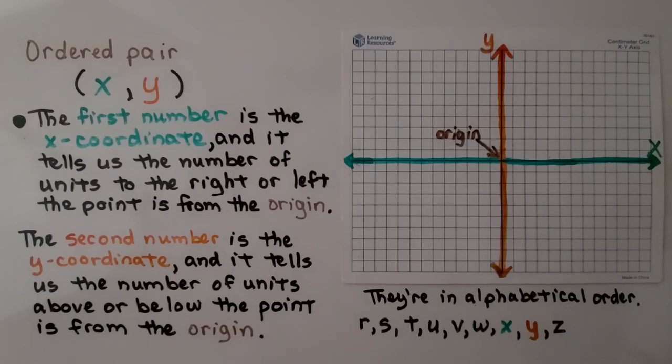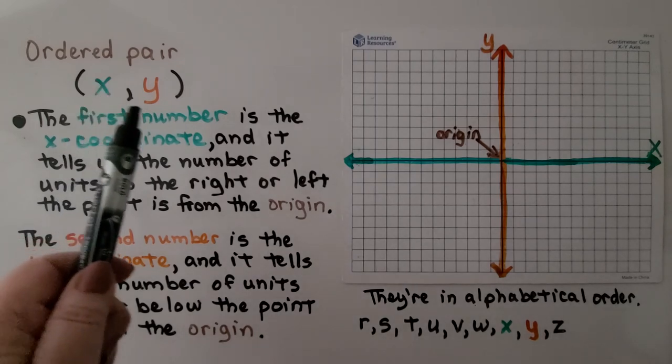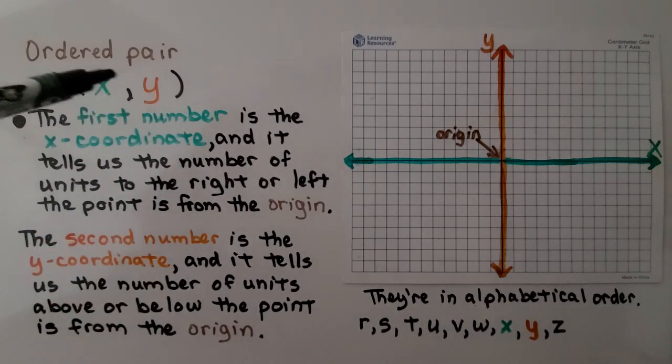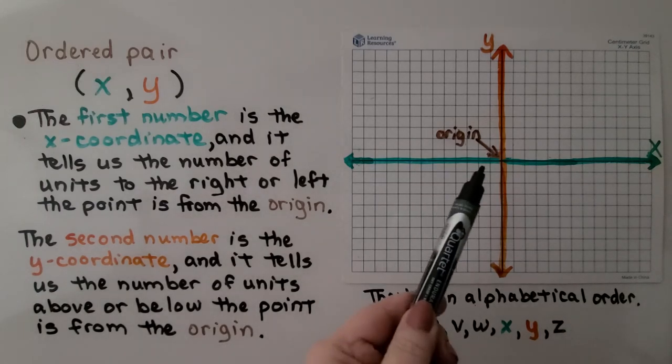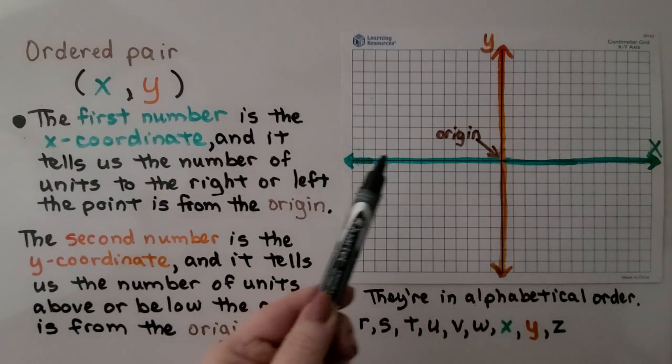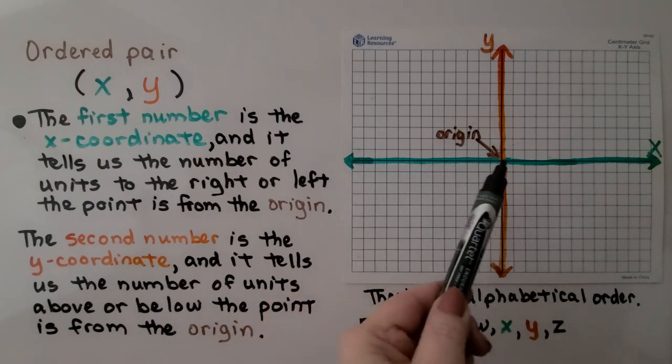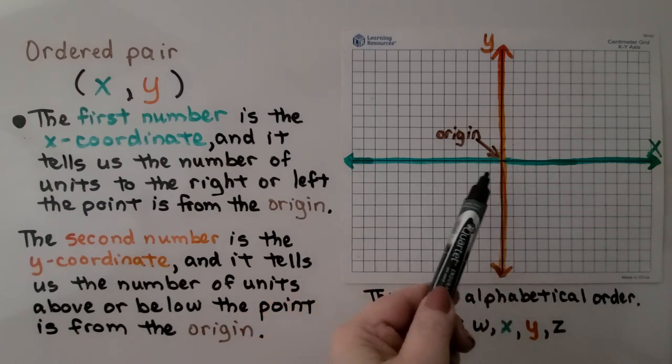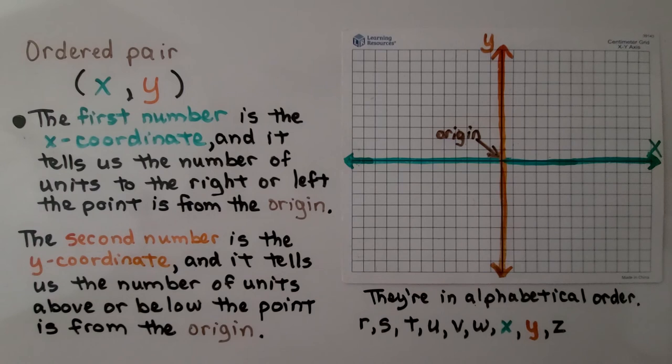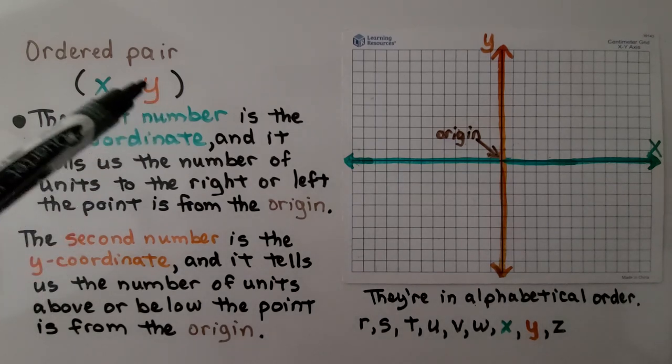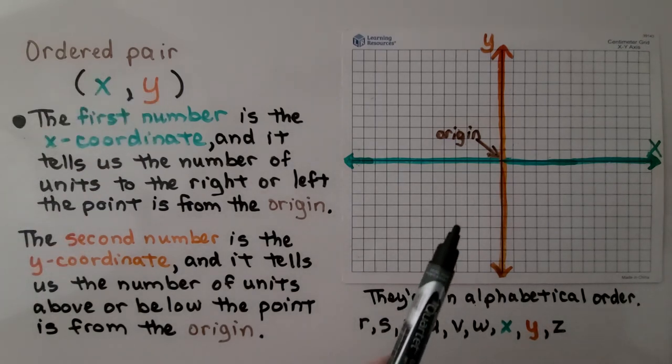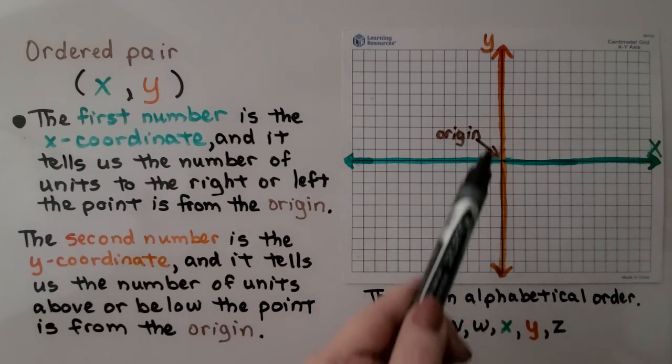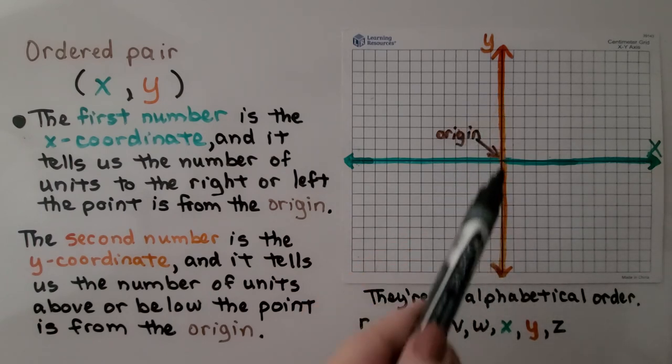So, for an ordered pair, we have x, then y. The first number is the x coordinate, and it tells us the number of units to the right or left that the point is from the origin. Remember, the origin's dead center right here. And the second number is the y coordinate, and it tells us the number of units above or below the point is from the origin.